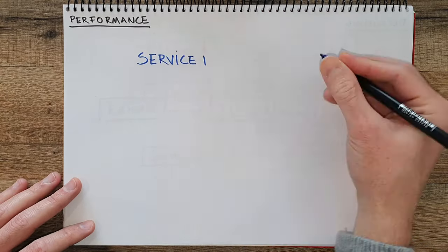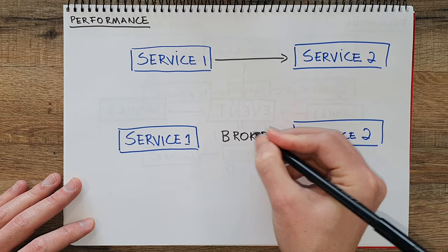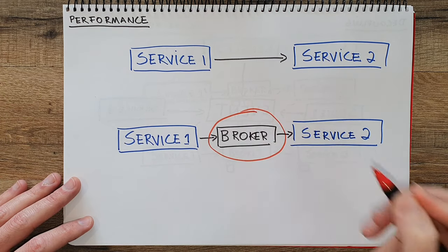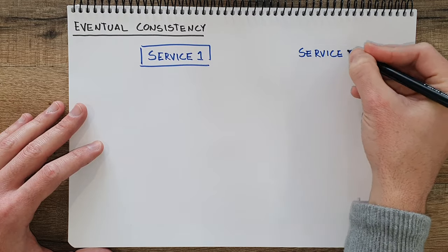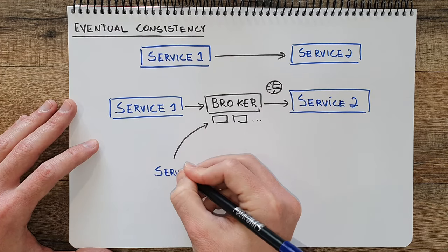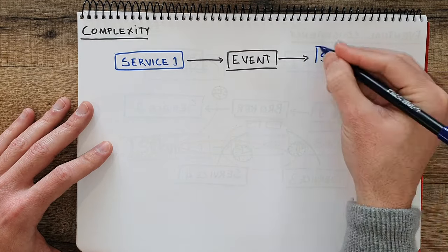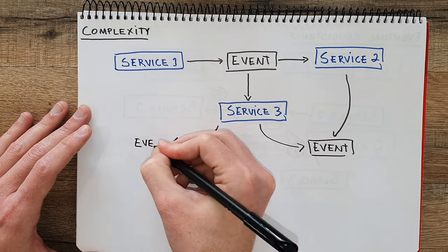Some cons that event-driven architecture has are, for example, performance. Before, you just called from service1 to service2 directly. Now you have an intermediary that will be redirecting the messages to the right services, so this adds some performance hit to the architecture in favor of scalability. There is also consistency — when you are calling directly from one service to the other, everything is happening at the same time. But when you have an event, there is always a delay between when you send it and another one reads it, and if you have multiple services reading from the same event, each of them can read at different times and be out of sync. There can also be more complexity when building event-driven architectures, because it's harder to track what happens and when, and how the communication lines run throughout the system.